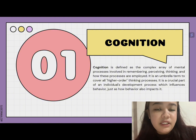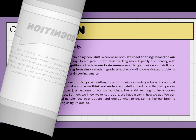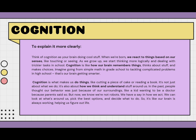Just as behavior also impacts cognition, think of cognition as your brain doing cool stuff. When we are born, we react to things based on our senses like touching or seeing. As we grow up, we start thinking more logically and dealing with trickier tasks in school. Cognition is like how our brain remembers things and makes choices — from simple math in grade school to complicated problems in high school. It is what makes us do things like cutting a piece of cake or reading a book.